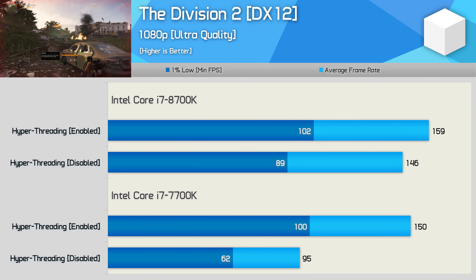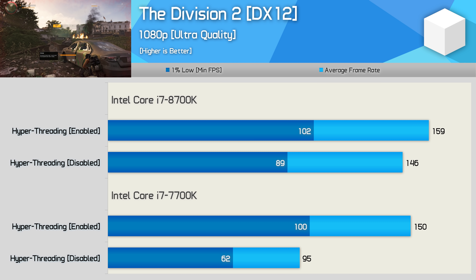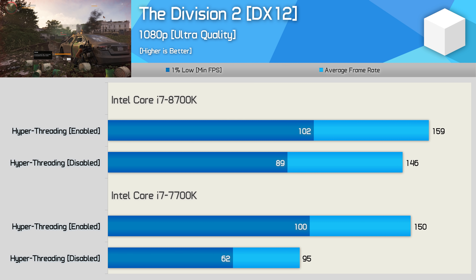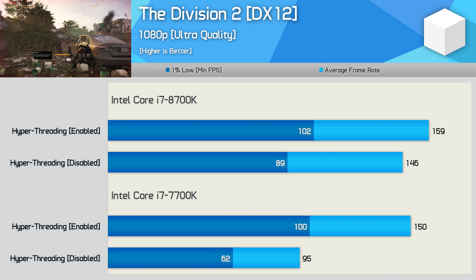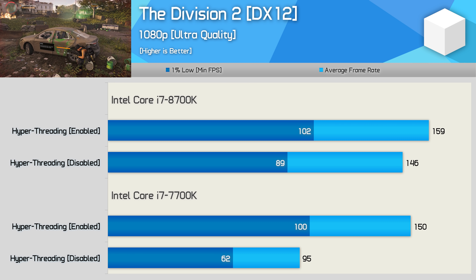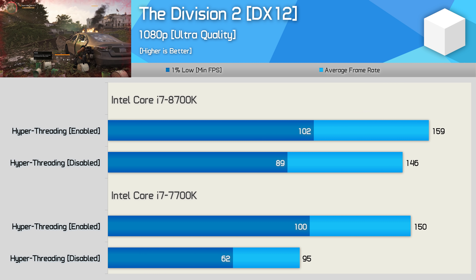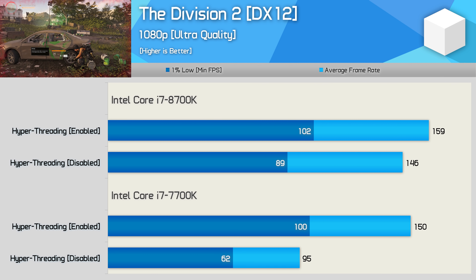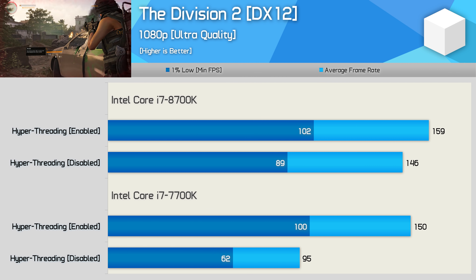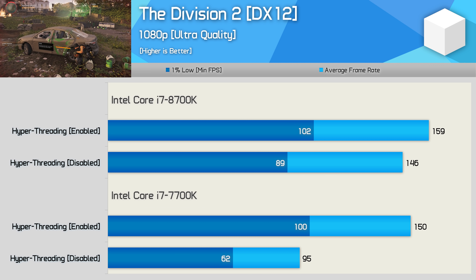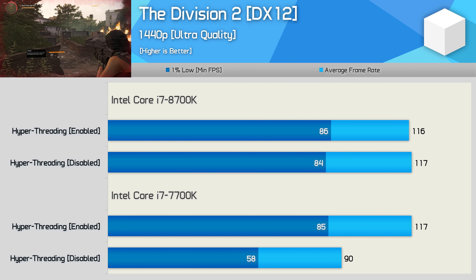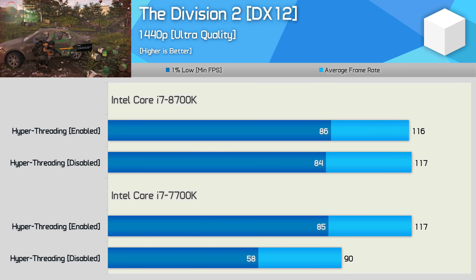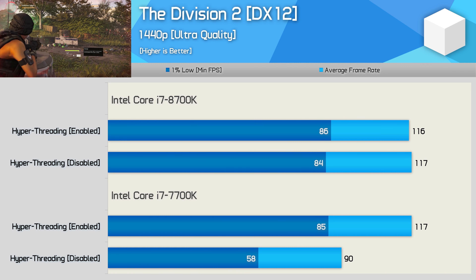This is pretty brutal — look at the performance drop-off for the 7700K with hyperthreading disabled in The Division 2. The average frame rate is reduced by 37% and the 1% low result by 38%. The performance impact for the 6-core 8700K isn't nearly as extreme, but even a 13% dip in 1% low performance won't be appreciated by most gamers. Moving to 1440p, the 8700K is no longer the performance-limiting component — that would be the RTX 2080 Ti — however we're still seeing a 32% reduction for the 7700K in 1% low performance.